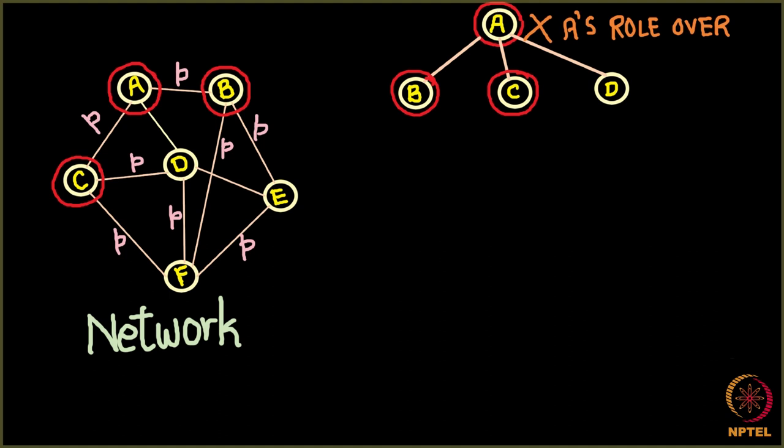In a branching model also at this step A's role was over. A got one chance to infect and A infected B and C. Now it is B and C's turn. Now B and C will go ahead and see which of their neighbors they can infect.